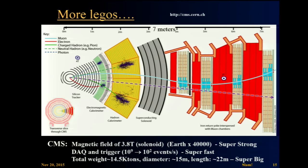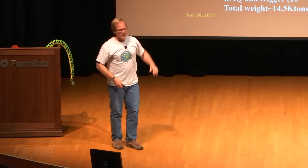This is the CMS detector, and it's only a little slice of it. The magnetic field here is 3.8 Tesla, so that's 40,000 times the Earth, so it's a super strong magnetic field. The DAQ, the way you read this whole thing out, brings these 10 to the 9 events per second down to something like a hundred or maybe a thousand events per second, so it's super fast, and its weight is 14.5 kilotons, diameter is 15 meters, so that's actually about 10 feet longer than the size of this. If you tried to put the thing in this building, it would not fit. It would stick out in about the fifth row, and I don't think it'd fit underneath the ceiling. It's huge.